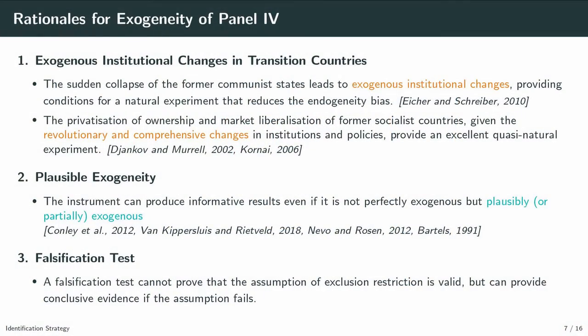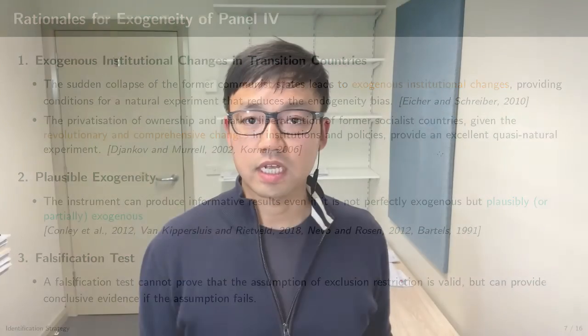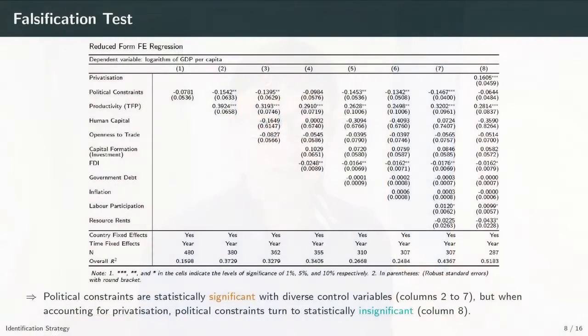Many studies found that even if the instrument is not perfectly exogenous, it can produce informative results. Based on the hierarchy of institution hypothesis and this plausibly exogenous idea, I use political institutions as an instrument in a panel setting. Lastly, one evidence is the falsification test. A falsification test cannot prove the assumption holds, but can provide decisive evidence when it fails. Political constraints are statistically significant with diverse control variables from columns 2 to 7, but when accounting for privatization, political constraints turn statistically insignificant, as seen in column 8.